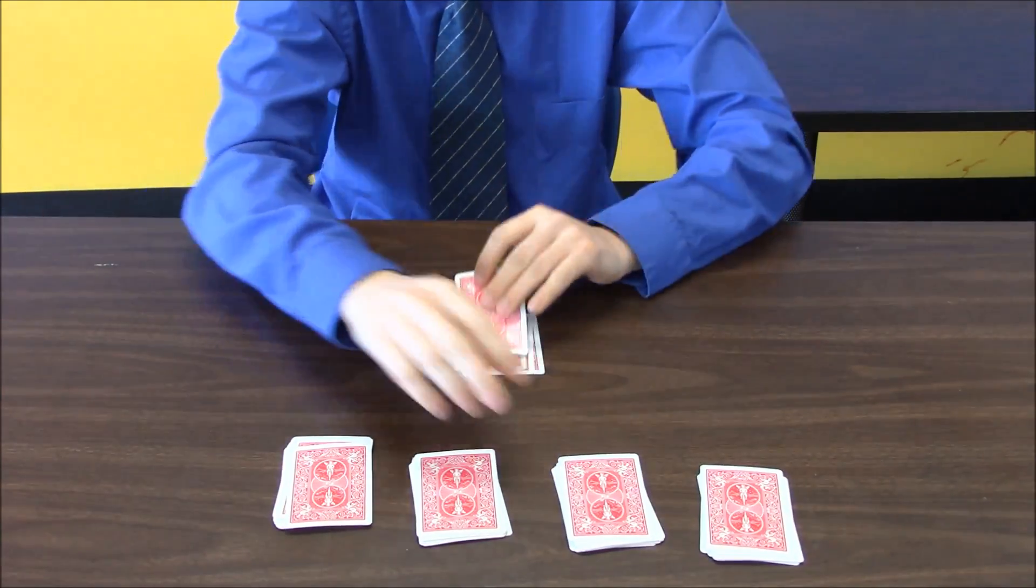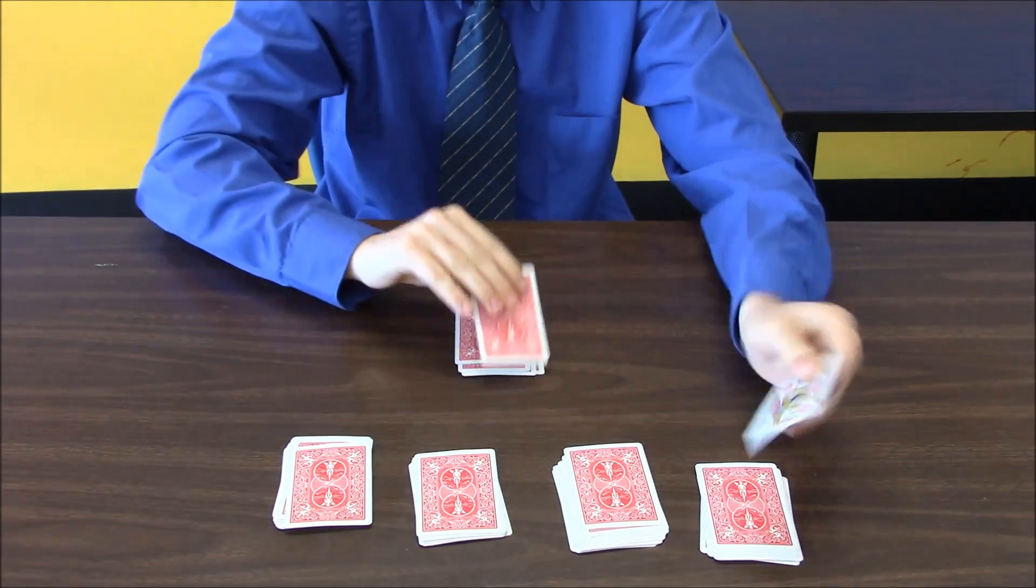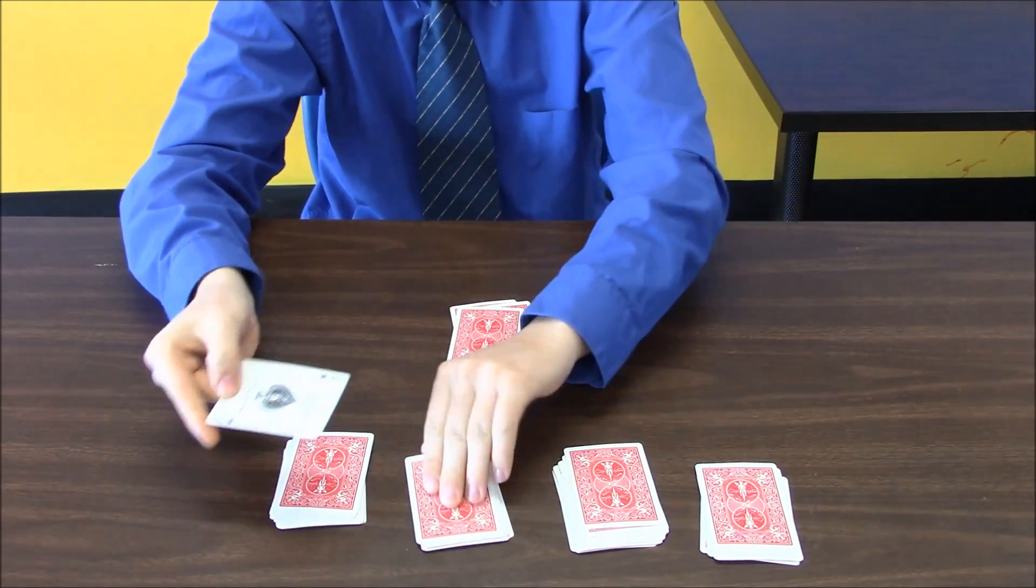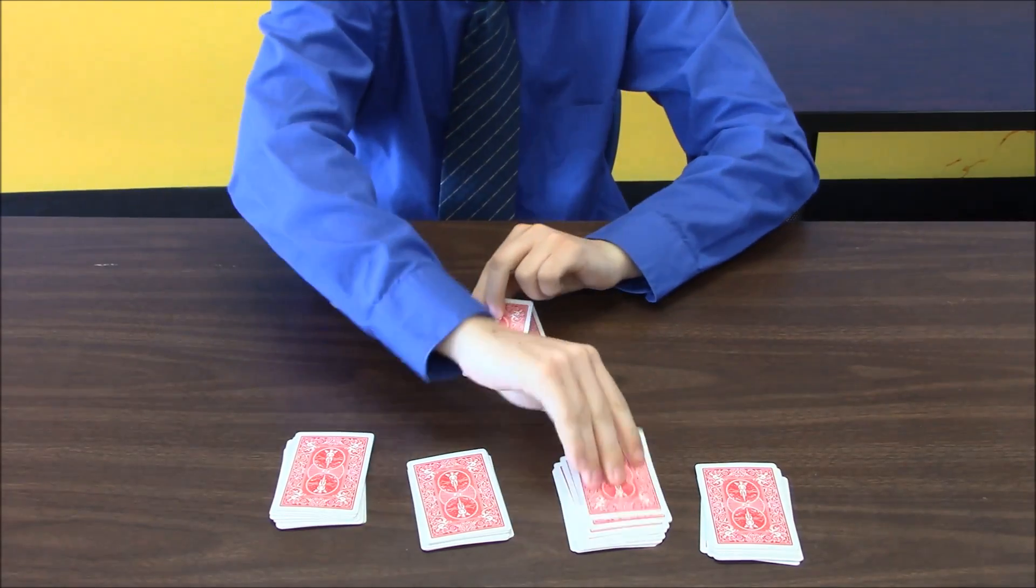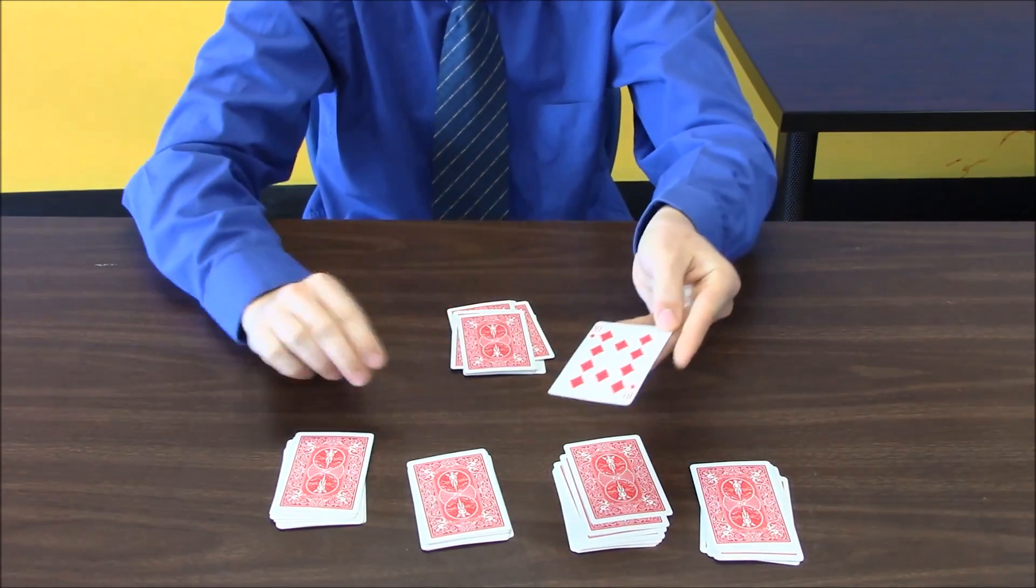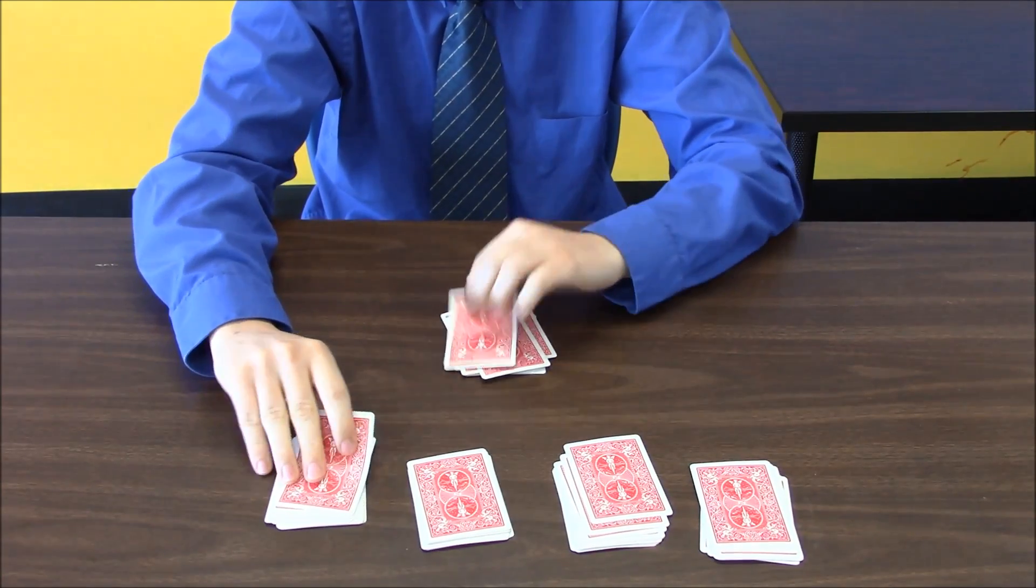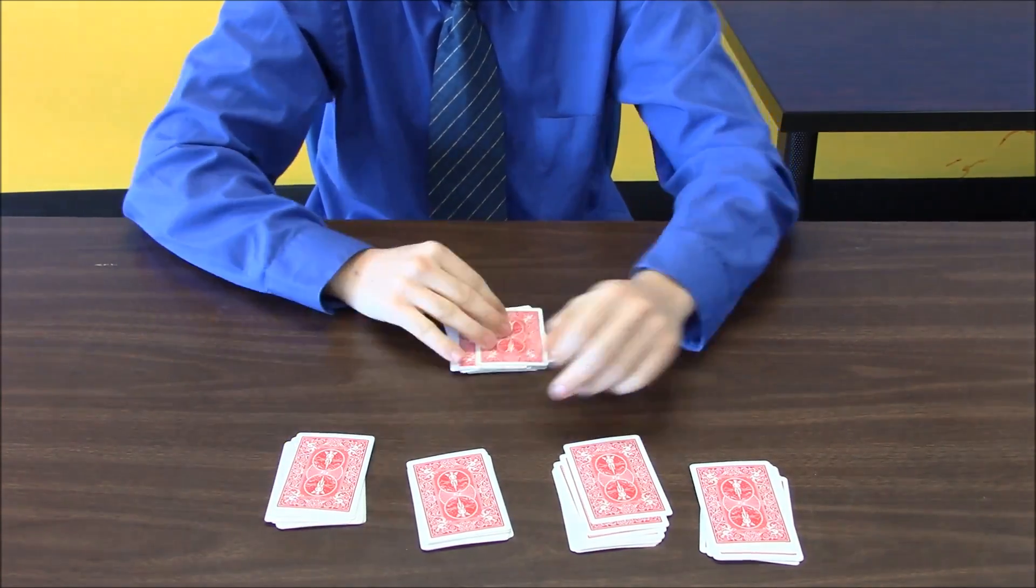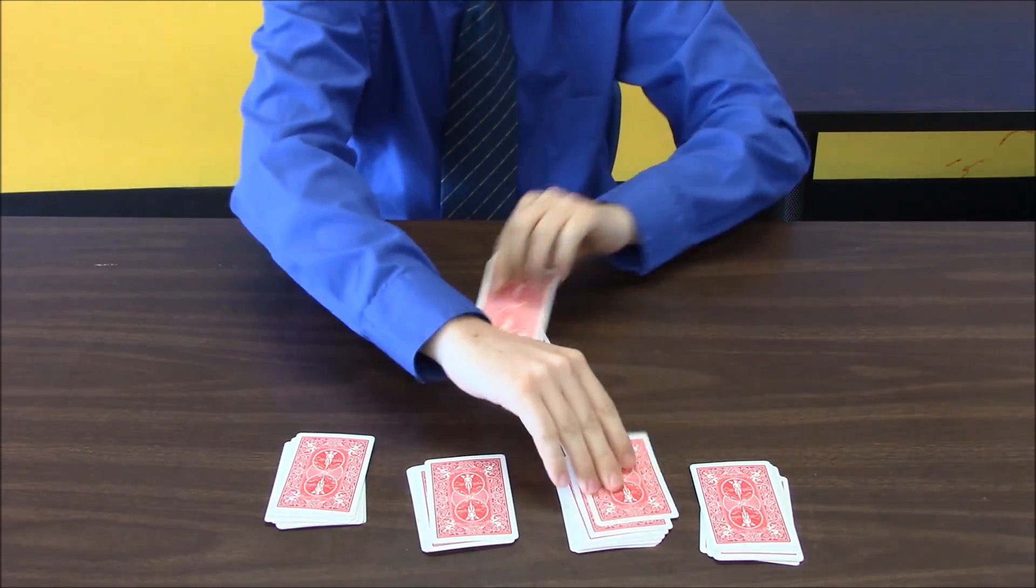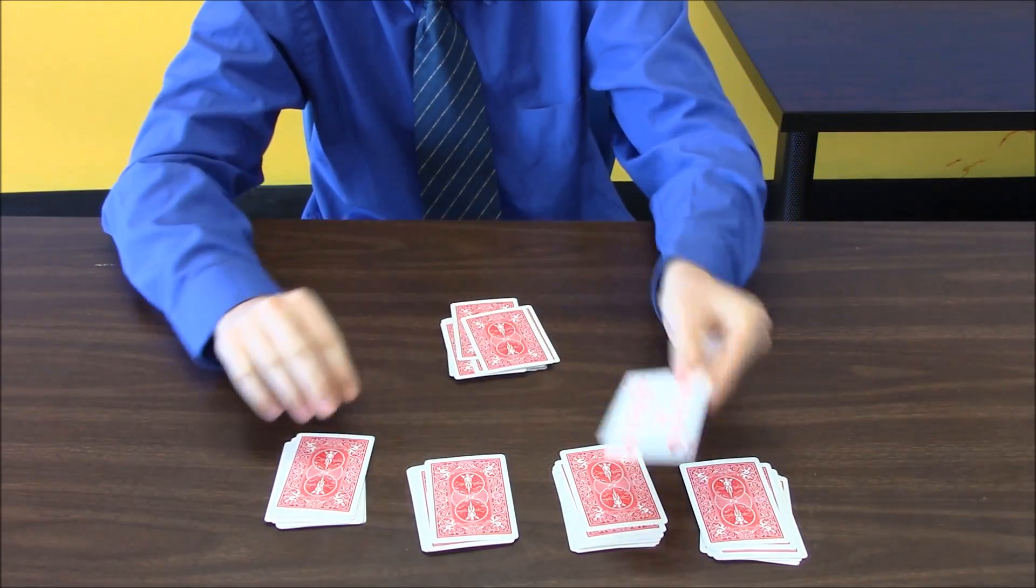Spade, heart, club, diamond. And these are all increasing by three, like ten plus three is thirteen. So I know the next card is going to be the king of spades. Three of hearts, six of clubs, nine of diamonds.